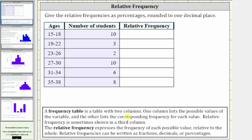A frequency table is a table with two columns where one column lists the possible values of the variable, which in this case are the intervals of ages, often called the bins, and the other lists the corresponding frequency for each value, which is the second column, which gives the number of students in each interval or each bin.